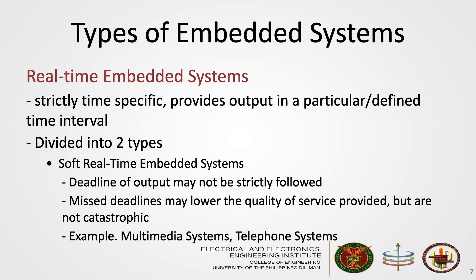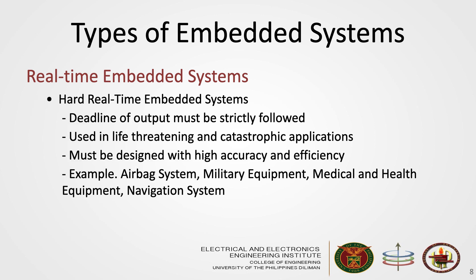However, further missed deadlines may cause the audio or video to lag or skip, which lowers the quality of the device. Hard real-time embedded systems, on the other hand, are those that must strictly produce an output within a deadline. These are used in life-threatening and catastrophic applications like airbags, military equipment, medical equipment, and navigation systems. Imagine if the airbag in your car activates one second after an impact, or if it's so sensitive that it activates with a sudden rush of strong wind — that is catastrophic, so this must be designed with high accuracy and efficiency.